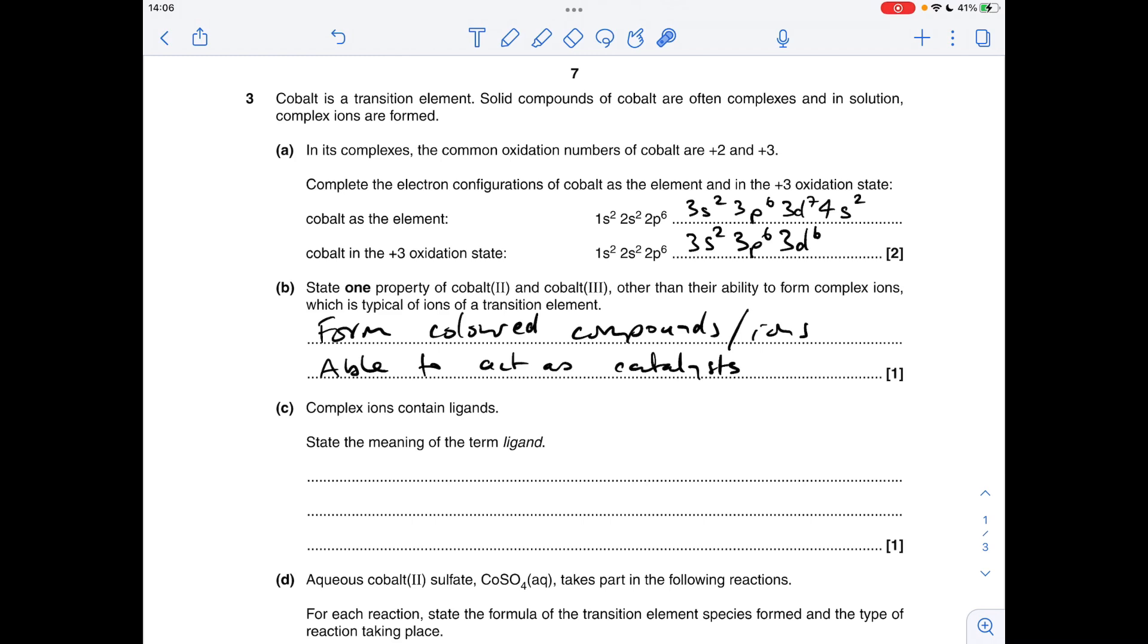Part C, so it's a definition essentially. State the meaning of the term ligand. So that's a species which bonds to a central metal ion by donating a pair of electrons, or you could say by forming a coordinate bond.